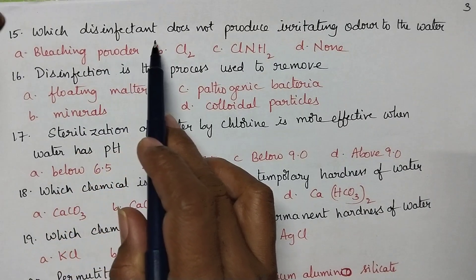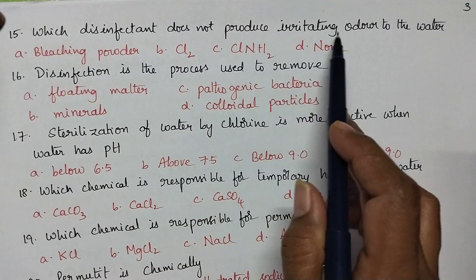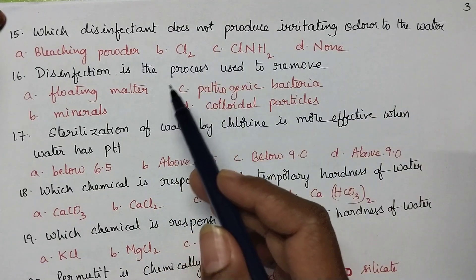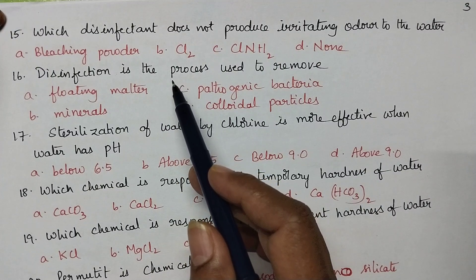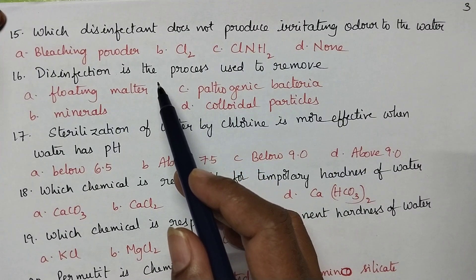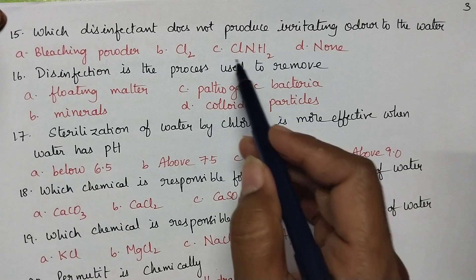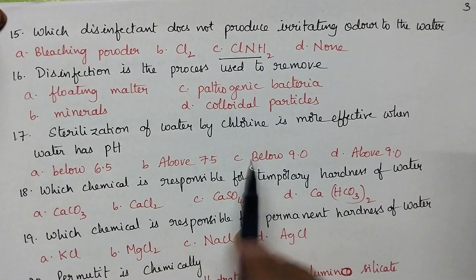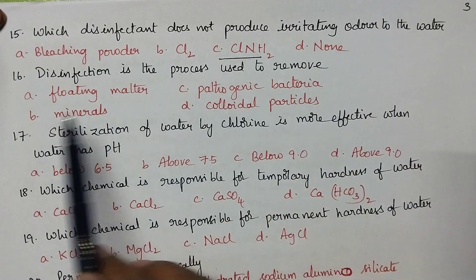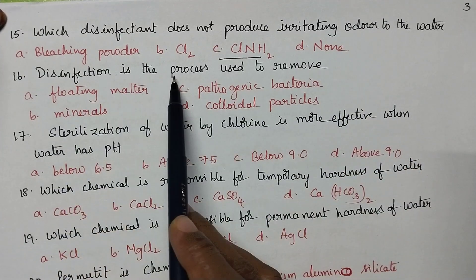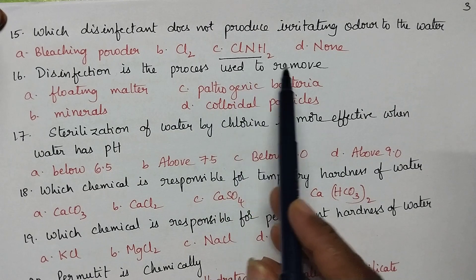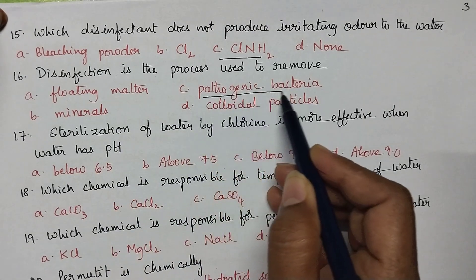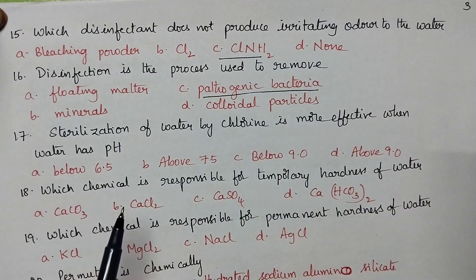Which disinfectant does not produce irritating taste to the water? We use different sterilizing agents, but when chloramine is used, it does not produce any irritating taste to the water. Through disinfection, pathogenic bacteria are removed from the water.